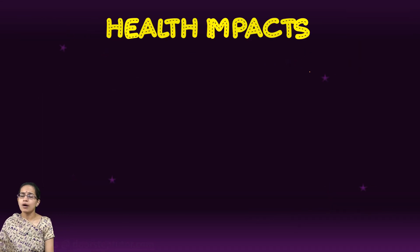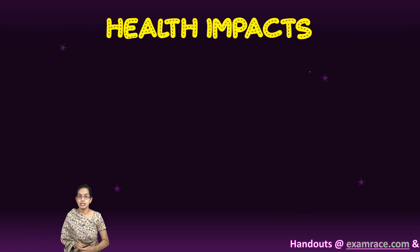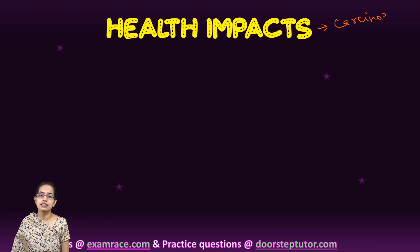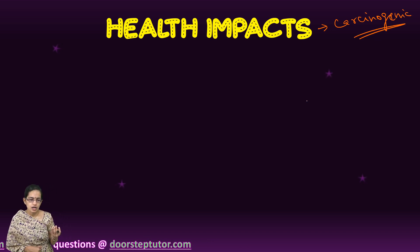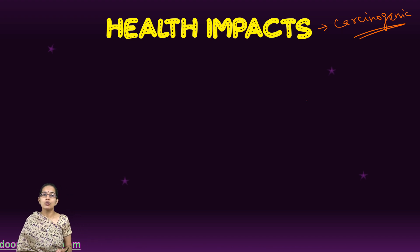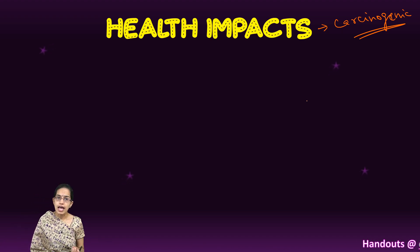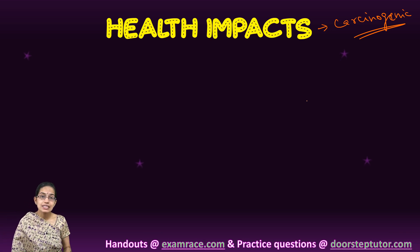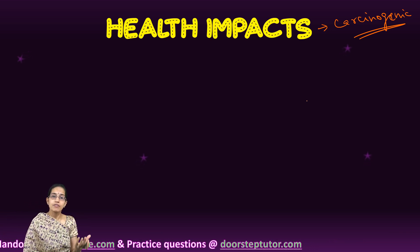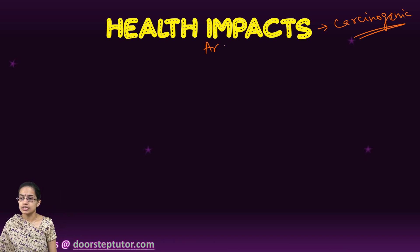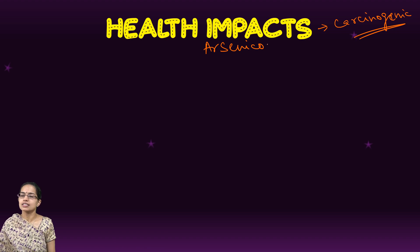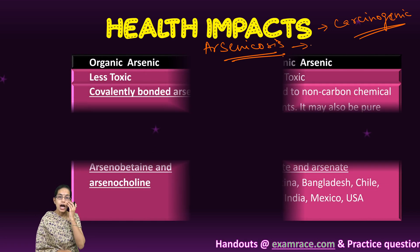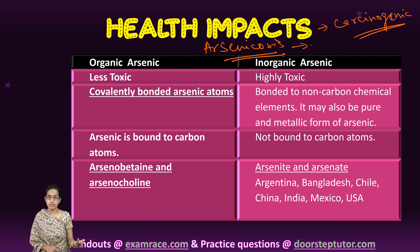Despite its many uses, arsenic has numerous health impacts. It leads to carcinogenic compounds that can cause cancer of the lung, bladder, kidney, and liver. It also causes nerve damage, inhibition of enzyme activation, muscle cramps, discoloration of skin, warts, and eventually multi-organ failure. Arsenicosis is one of the major diseases caused by accumulation of high proportions of arsenic in the human body, and it can lead to multi-organ failure.